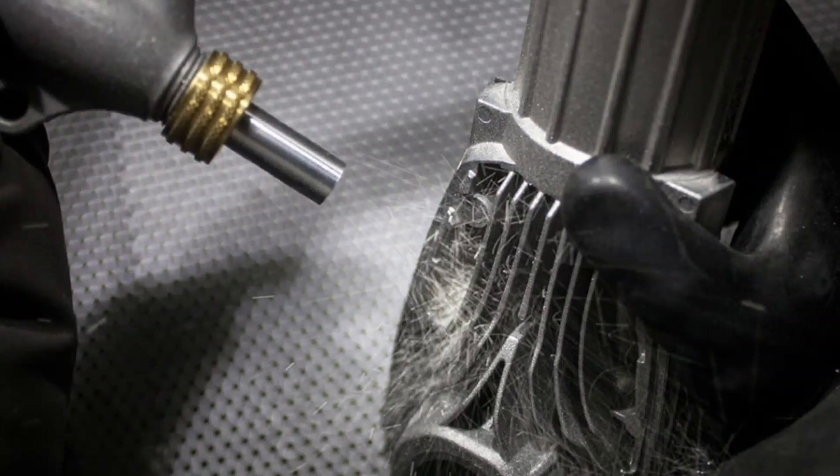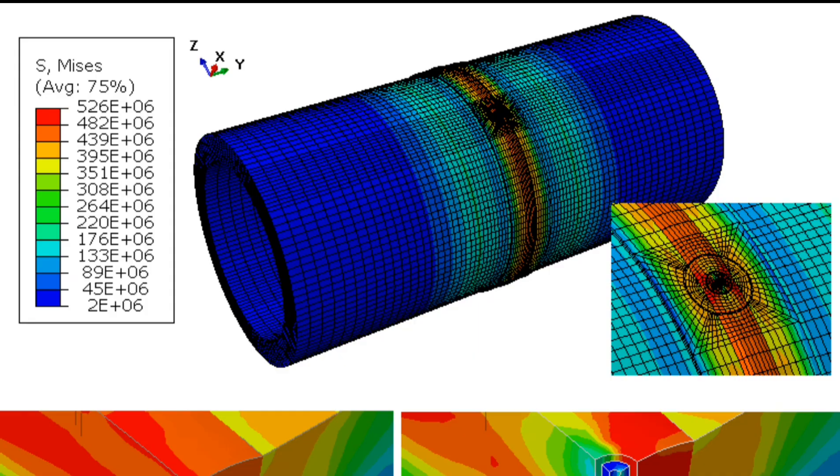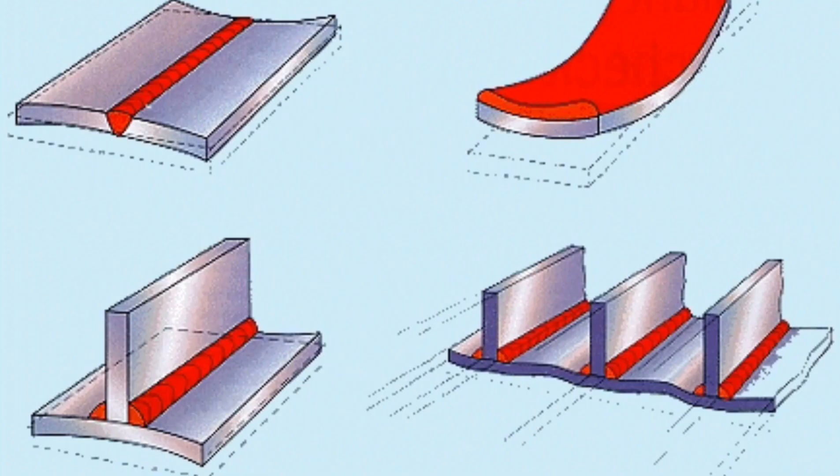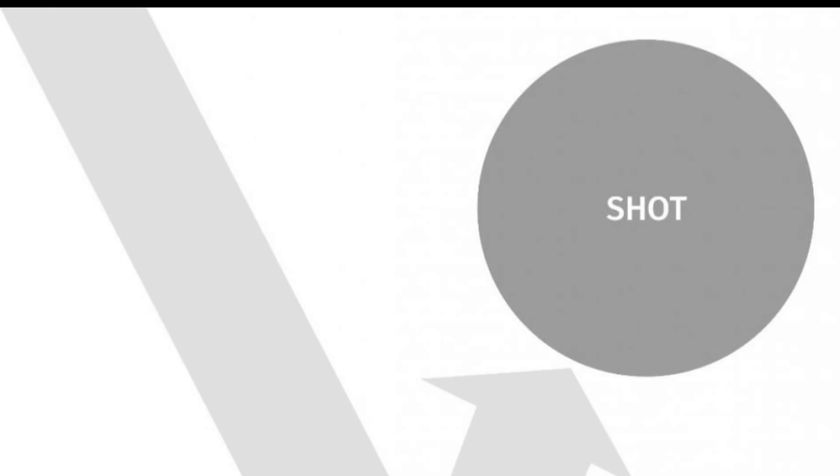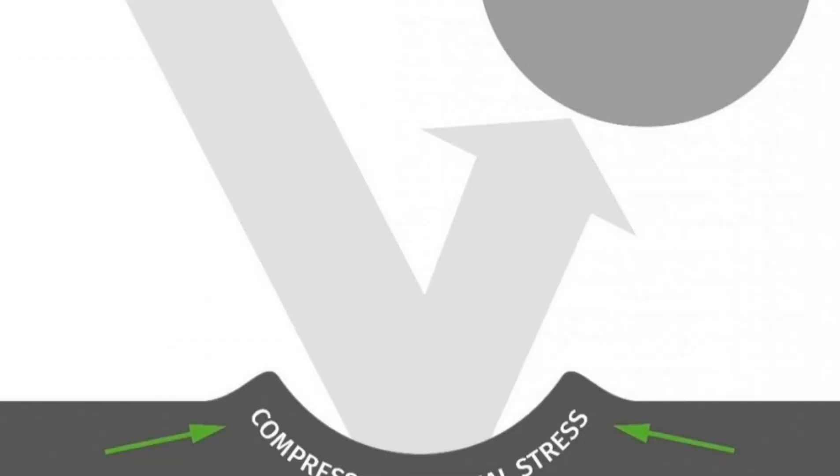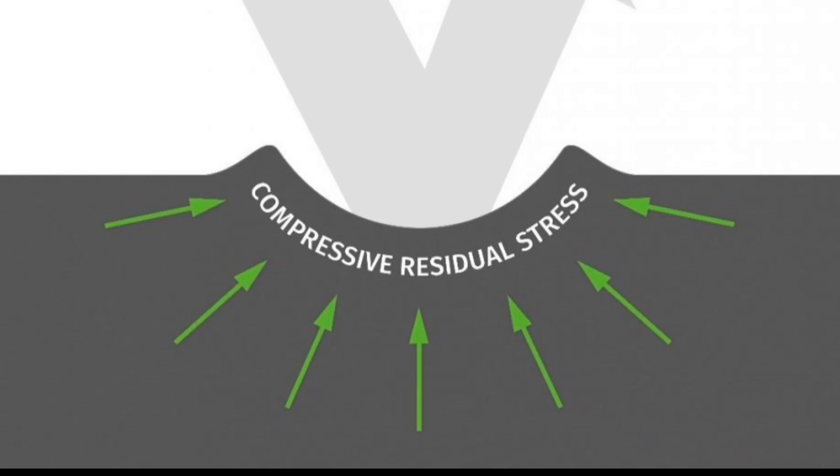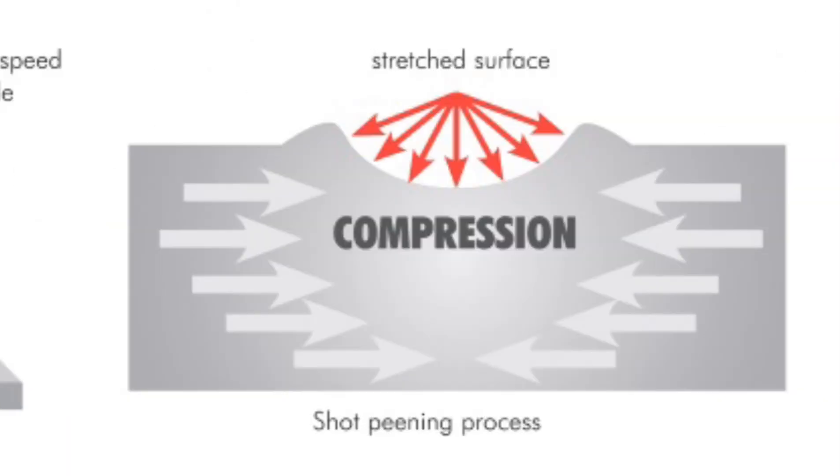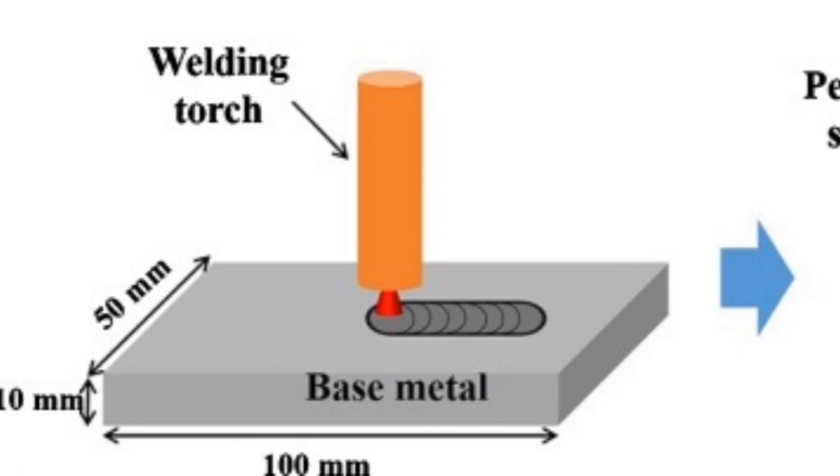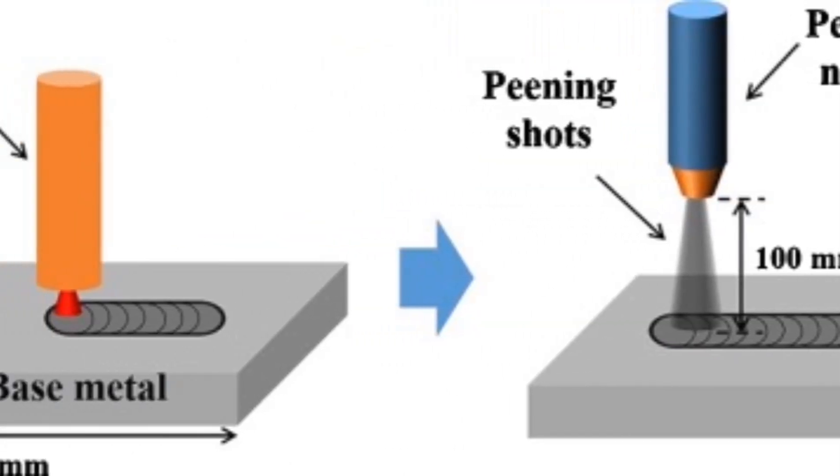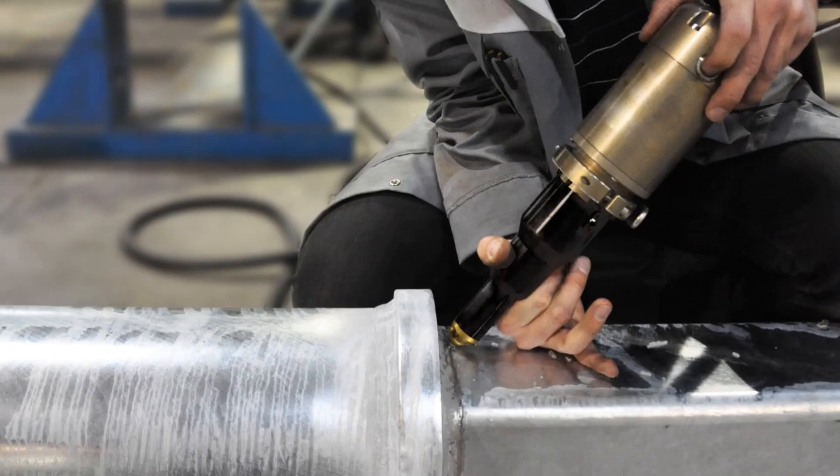Pinning is a post-welding process to relieve stress and reduce distortions in welds. It works by mechanically deforming the weld surface to create beneficial compressive stresses that counteract the tensile stresses generated during welding.